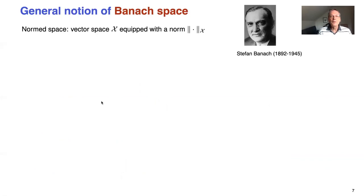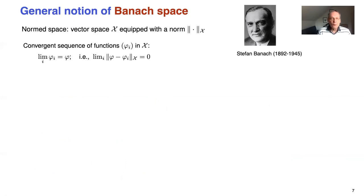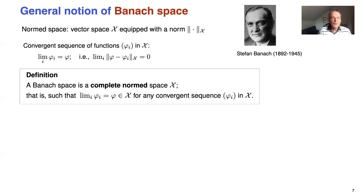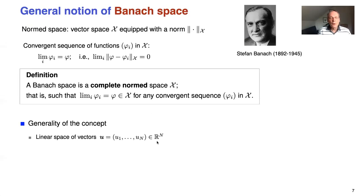We need Banach spaces. What's a Banach space? You all know what a vector space is and what a norm is. In infinite dimensions, you have the problem that things can converge to a limit that lies outside the space, which doesn't happen in finite dimensions. Banach spaces are complete normed spaces, meaning that all limits of convergent sequences in the norm are also part of the space. It's a very general concept covering linear algebra but also function spaces, which are more relevant to machine learning.